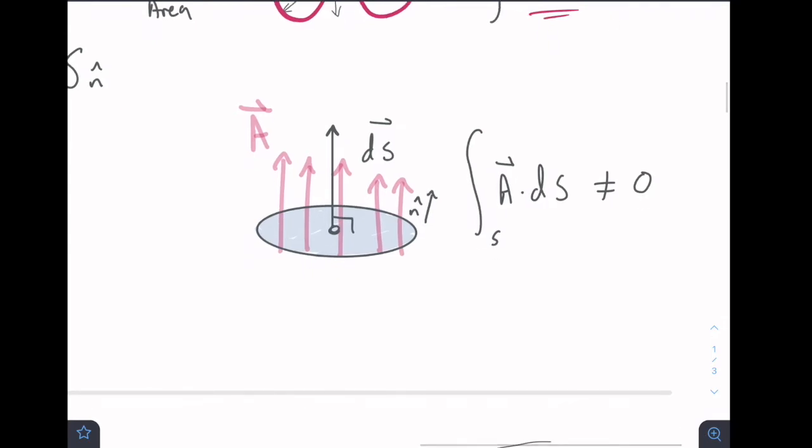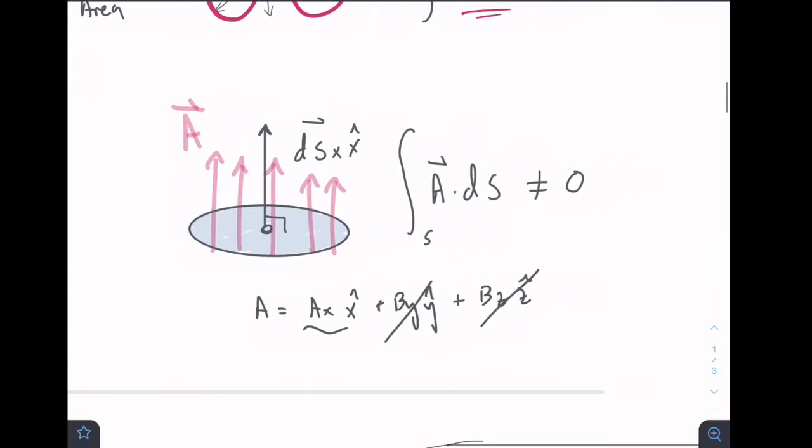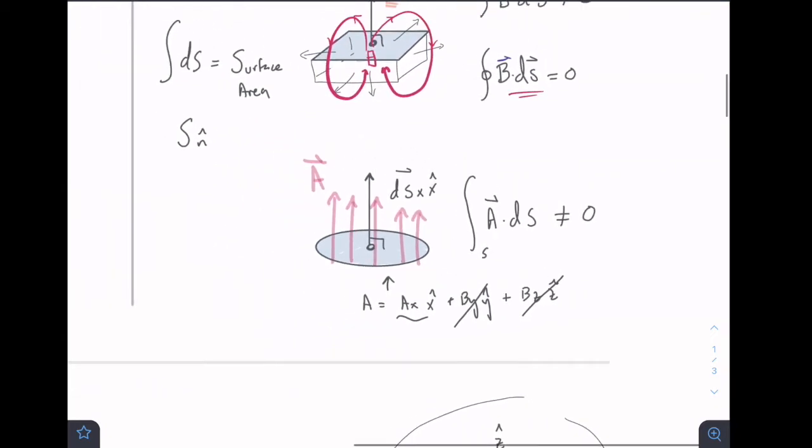So say this is in the X direction. If that's my, just for example, this is DS X and X is the vector direction. And I have my A vector is equal to AX X-hat plus BY Y-hat plus BZ Z-hat. None of these terms are going to be coming through the surface. It's just really this one. So this is going to contribute to the flux through the surface. So my surface flux would not be equal to zero.